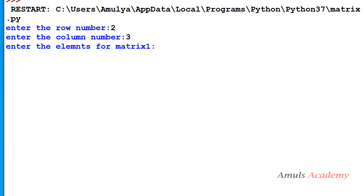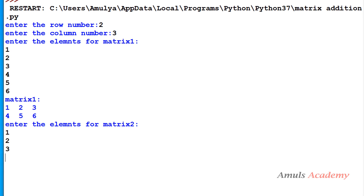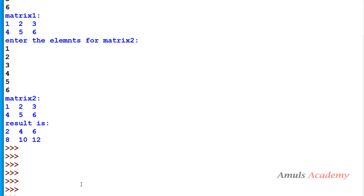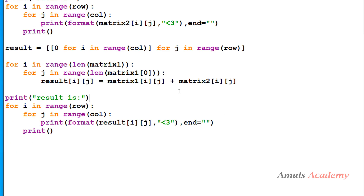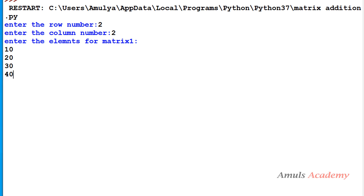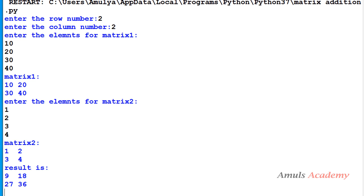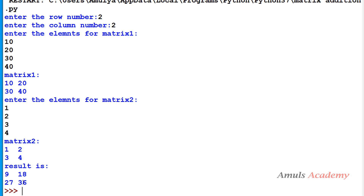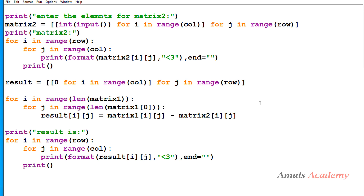Let's test with a 2x3 matrix: entering 1, 2, 3, 4, 5, 6 for matrix 1 and the same for matrix 2 gives the result 2, 4, 6, 8, 10, 12 — 1+1=2, 2+2=4, and so on. For subtraction, you just change the plus sign to minus in the formula. Running the program gives results like 9, 18, 27, 36 — subtraction is also an element-by-element operation.